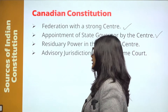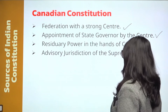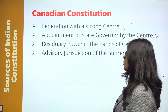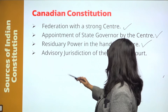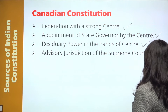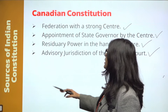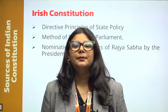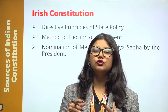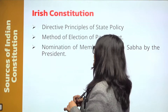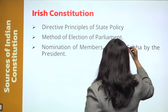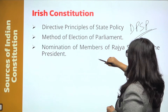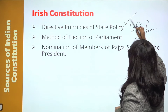Next is residuary powers. Residuary powers means any new law or act that is not mentioned in the Union list, state list, or concurrent list — the Union Parliament makes such laws. So who holds the residuary powers? The center. This feature is adopted from the Canadian Constitution. Next is the advisory jurisdiction of the Supreme Court, also adopted from the Canadian Constitution.